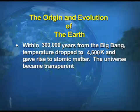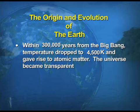Within 300,000 years from the Big Bang, temperature dropped to almost 4,500 Kelvin and gave rise to atomic matter. The universe became transparent. These stages in the Big Bang theory talk about the formation of the universe as a whole and don't give any specific example of only the formation of the Earth.